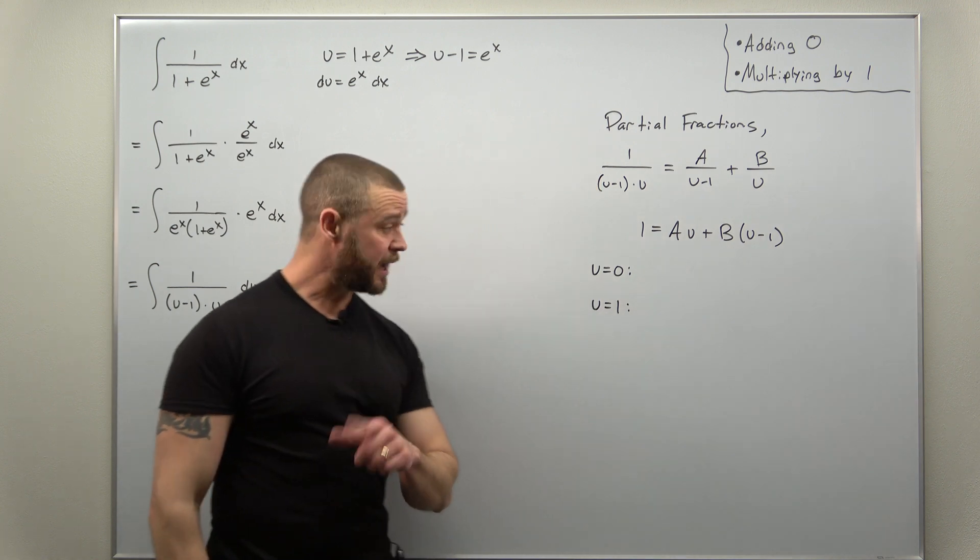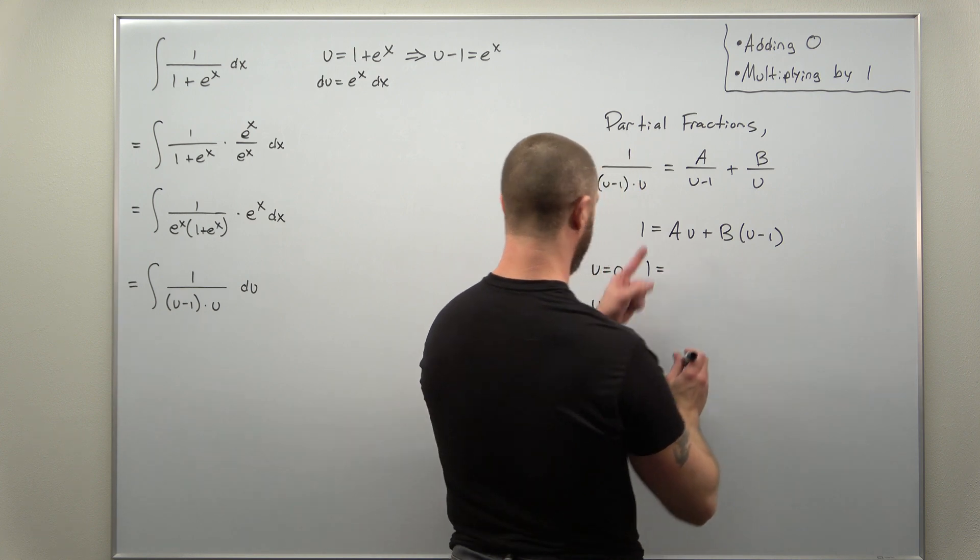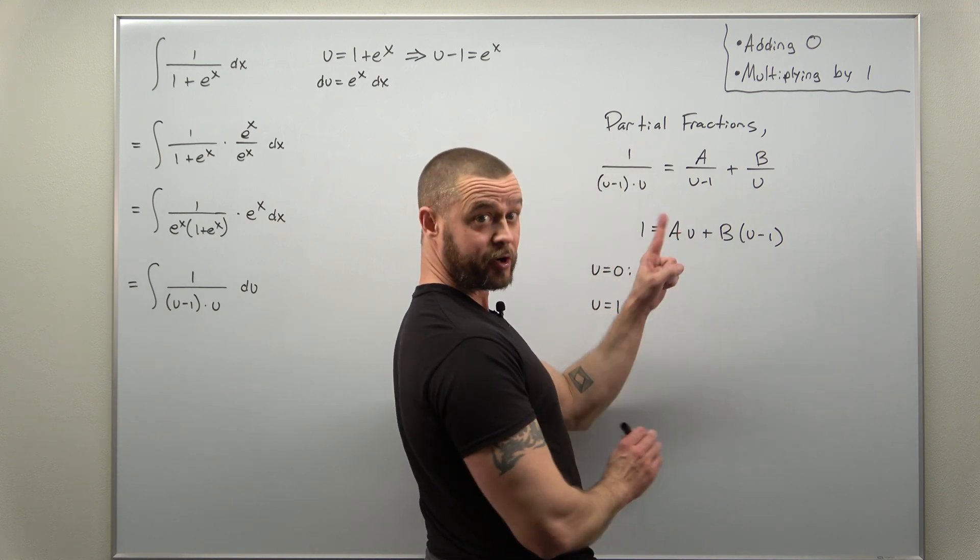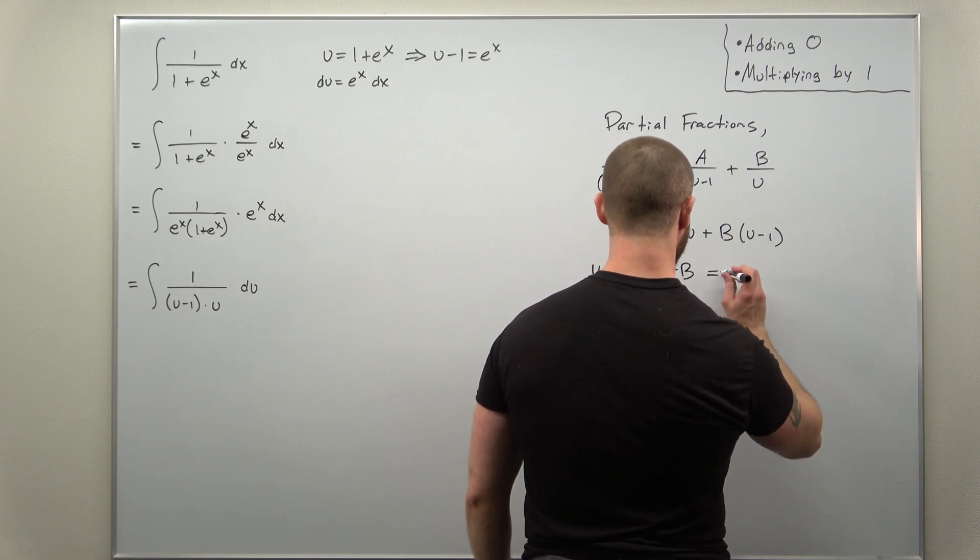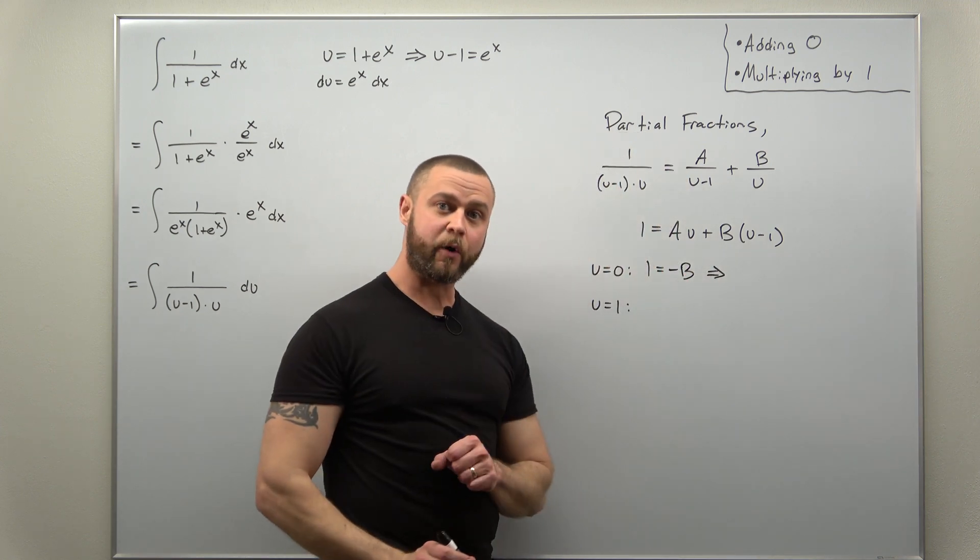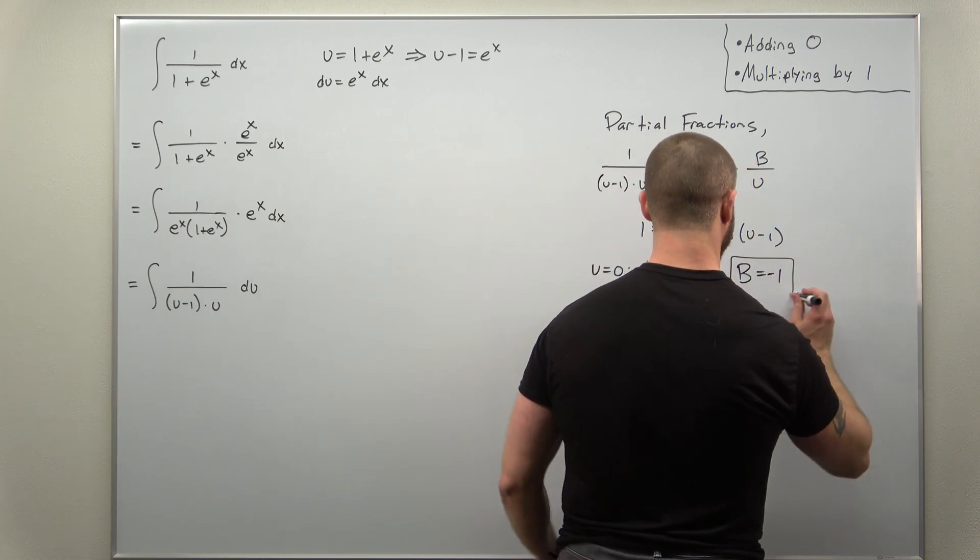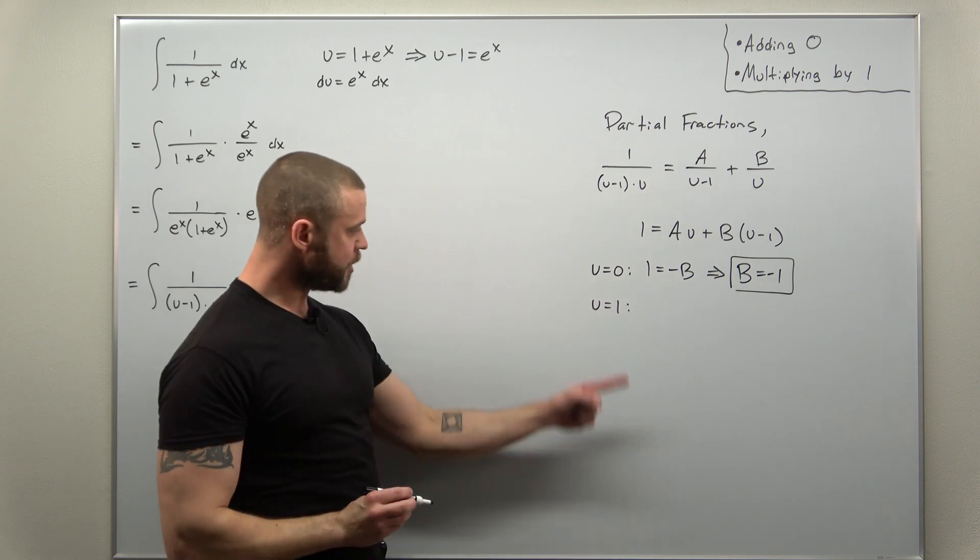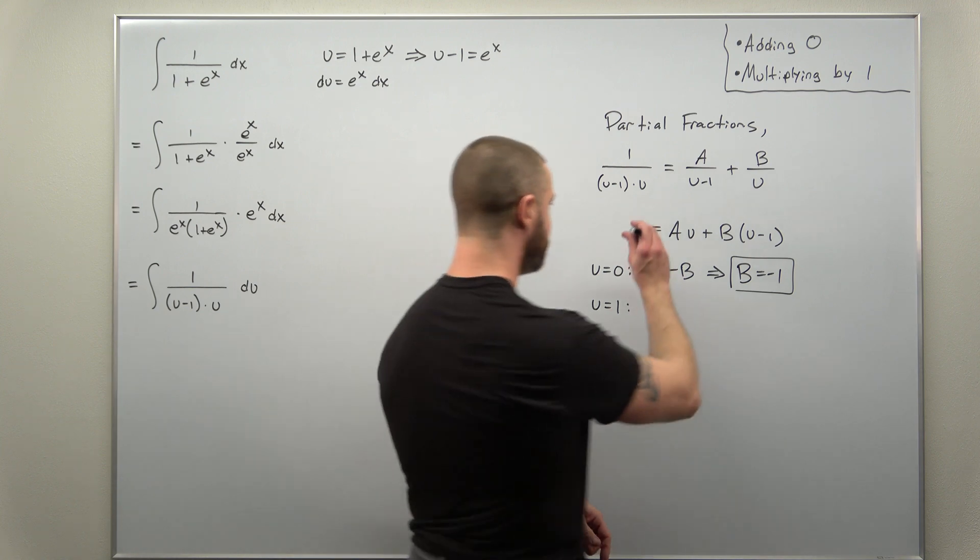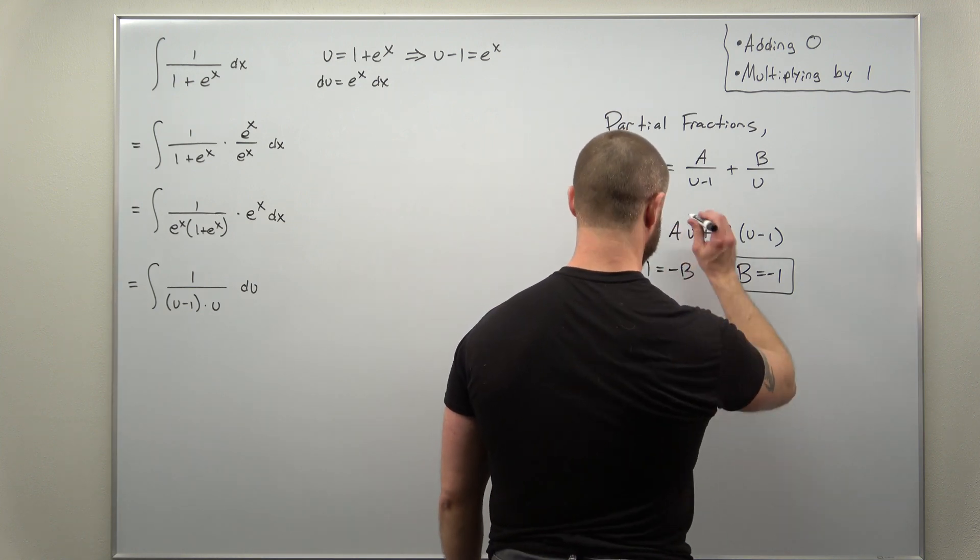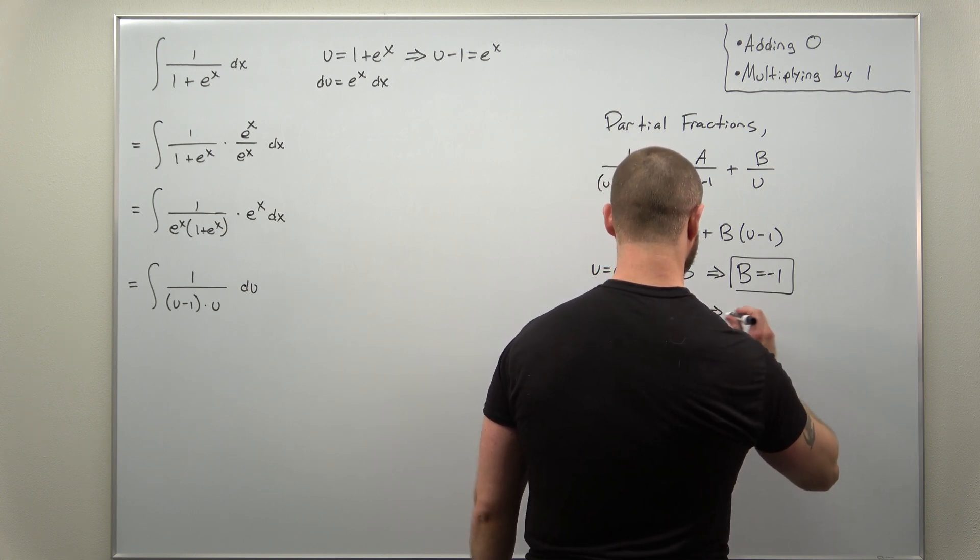And we'll just take our time and do that individually. Plug in u as zero, looks like we get the equation one equals, the A terms gone, and we get now a minus one, so minus B. And we can solve that, it looks like we're going to get B as negative one. All right, and if you go ahead and plug in u as one, now your B term is gone and we get the simple equation one equals well, A since u is one, and that tells us A is one.